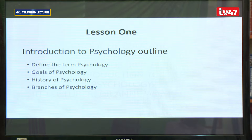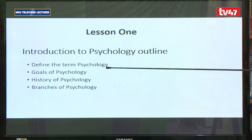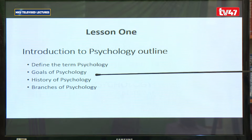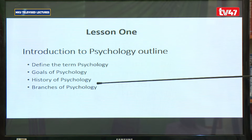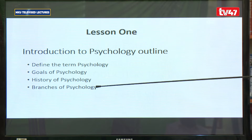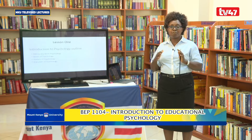In this unit, this is our lesson one, and we are going to start by looking at the Introduction to Psychology. There is no way you can understand Educational Psychology before you understand what psychology is. In this lesson, we are going to look at at least four things: first, we will define the term psychology; then look at the goals of psychology; then a brief history of psychology; and finish by looking at the various branches of psychology.